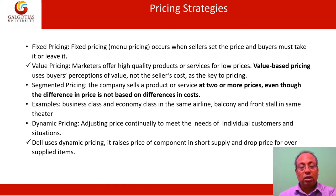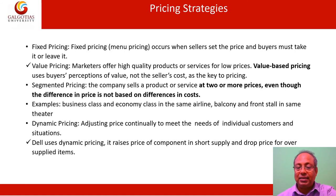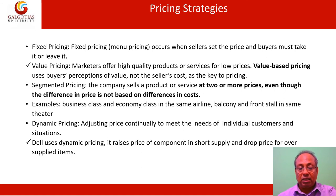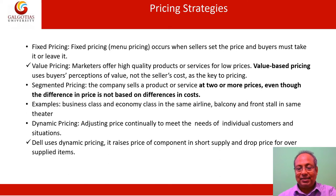Now I'm going to talk about segmented pricing. The company sells a product or service at two or more prices, even though the difference in price is not based on differences in costs. Here, different customers pay different prices for the same product or service. For example, in the same plane you are traveling, there is business class as well as economy class. Similarly, in a movie theater, you will find balcony, front stall, and middle stall, with different prices charged for these services. Railways also have first class, second class, three-tier, etc., and charge differently for different levels of service.